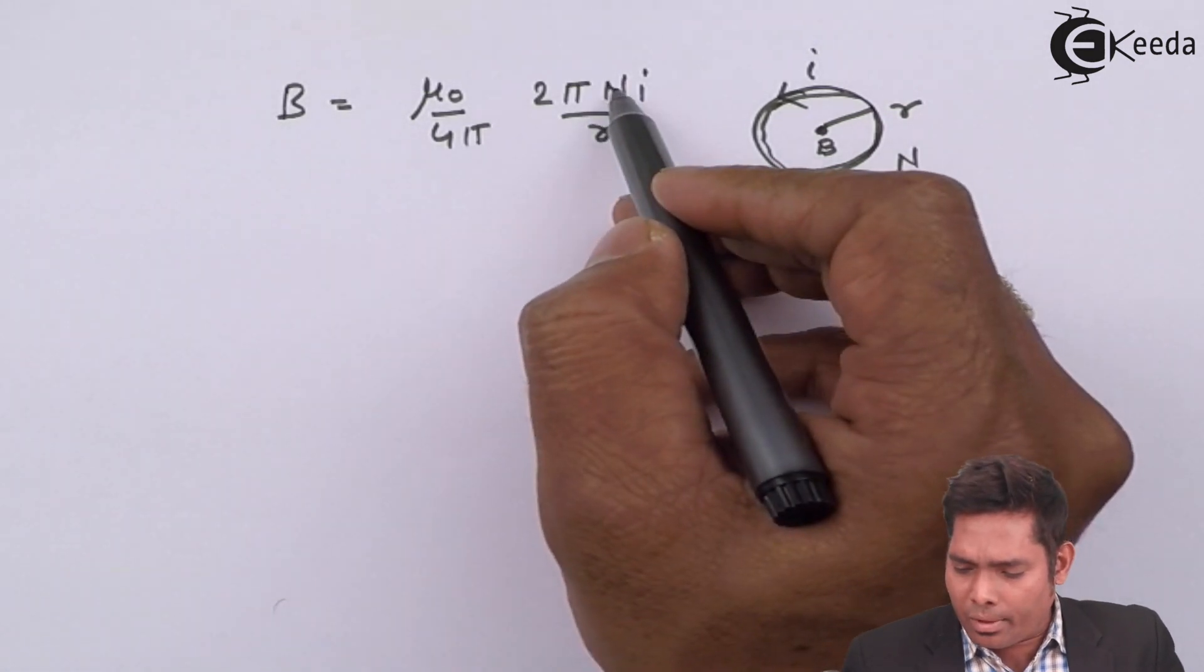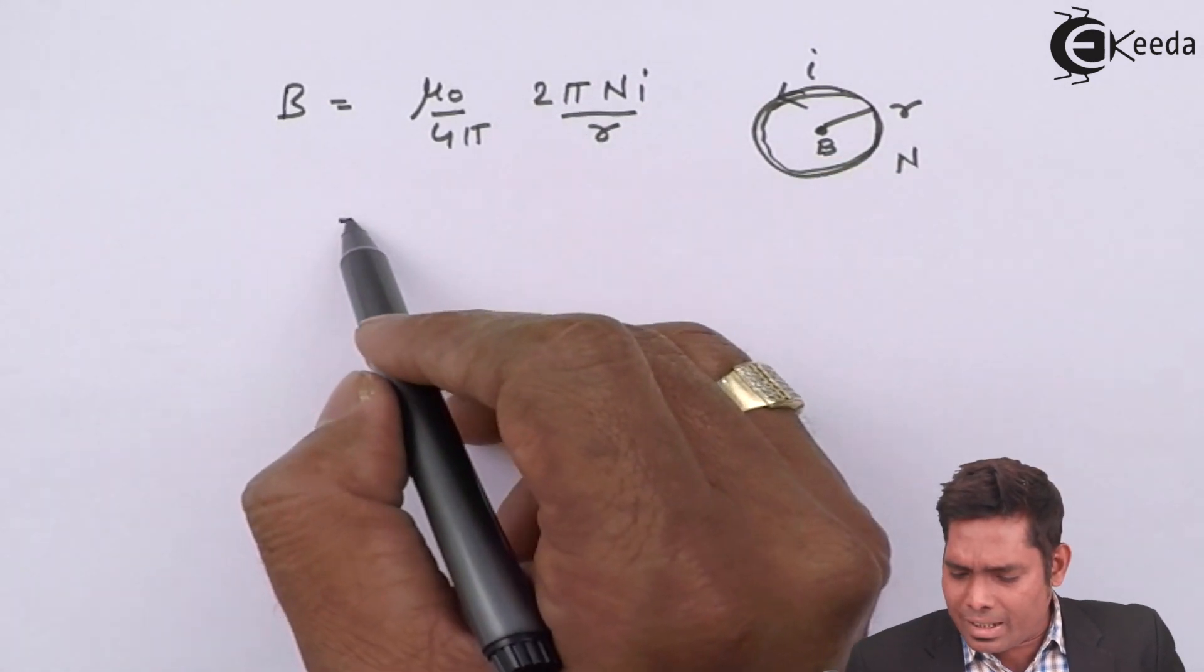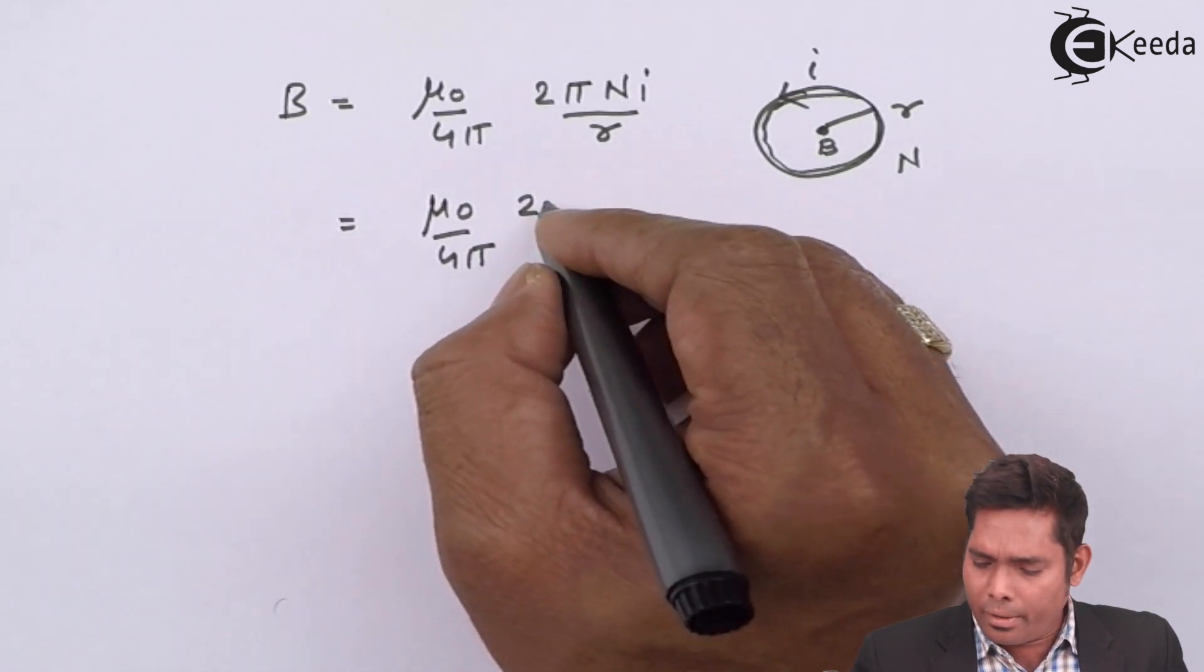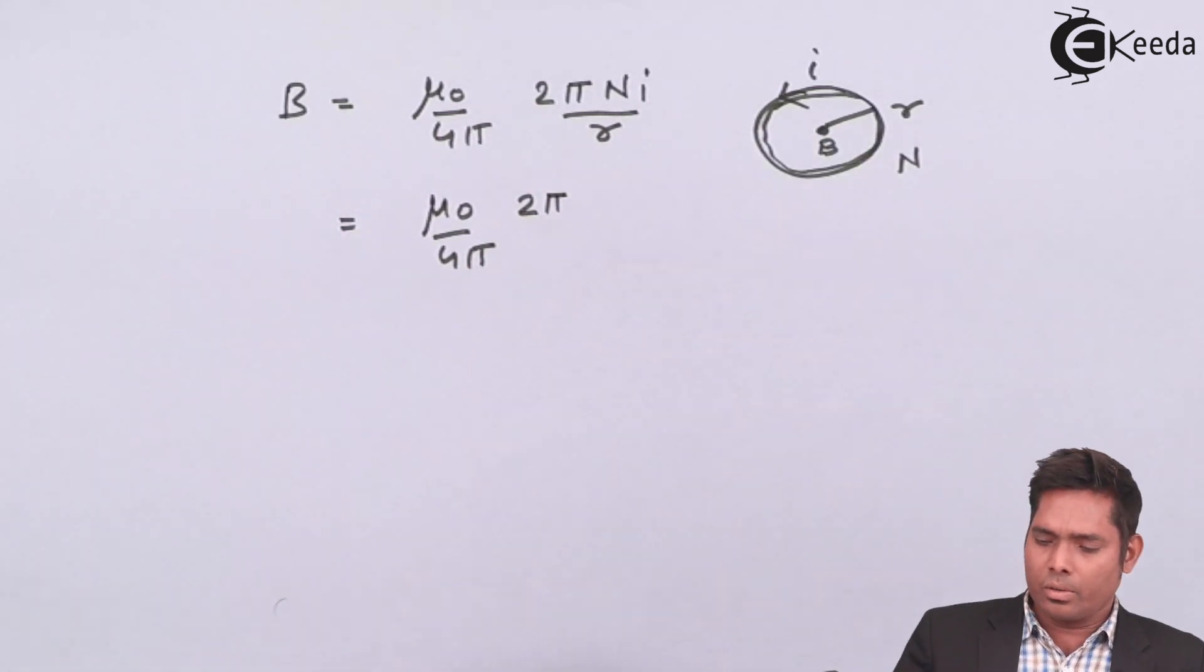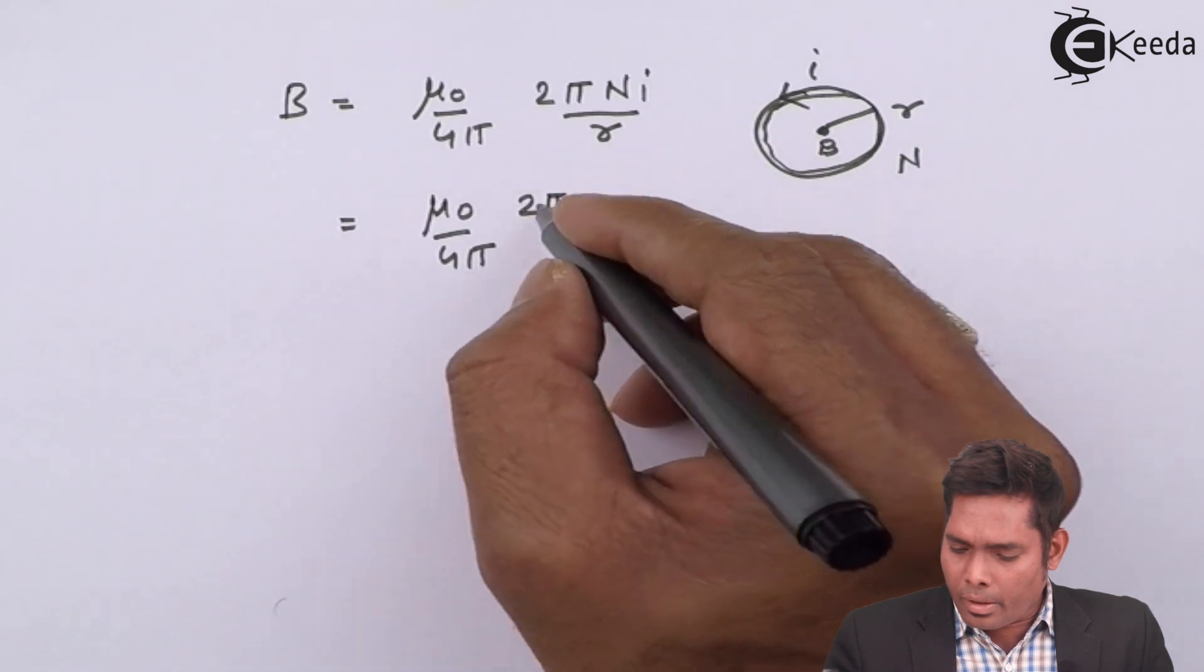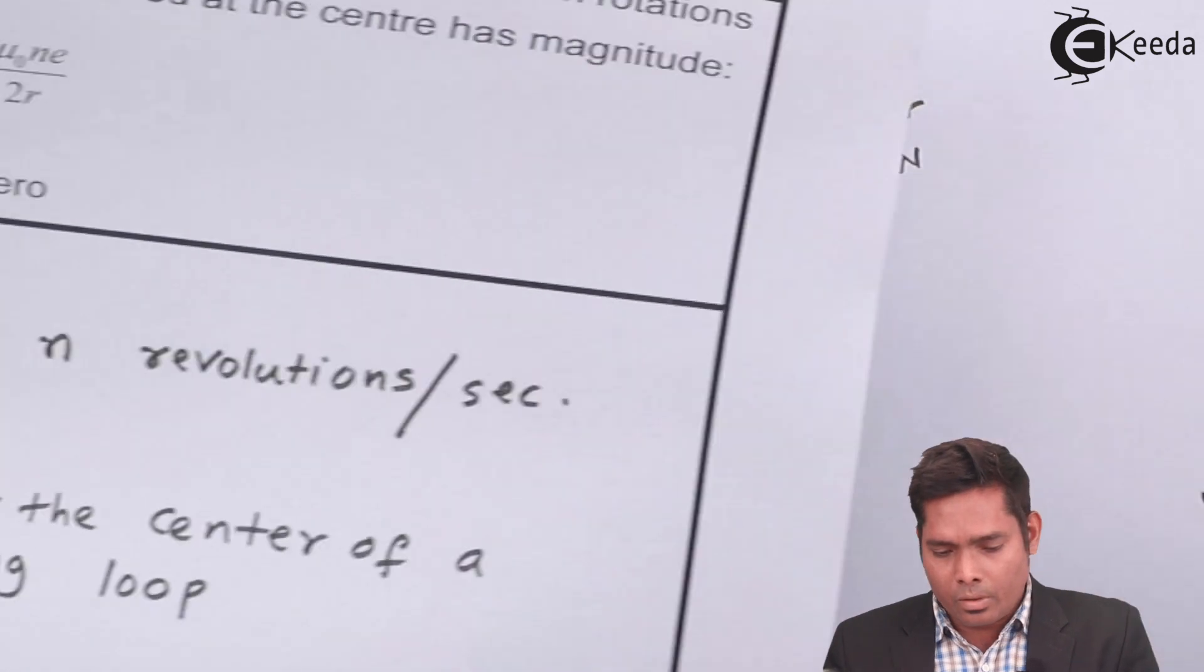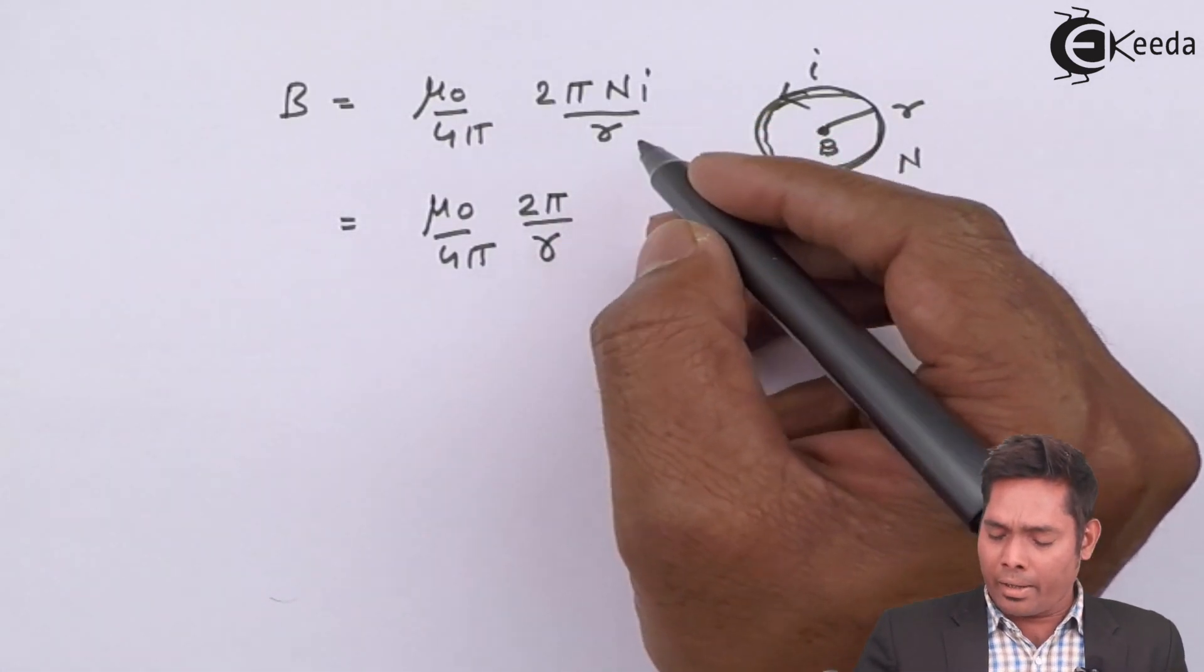Now, where n is the number of turns. Now, for this case, it is mu 0 upon 4 pi, 2 pi in one rotation. It is 2 pi, n is 1 divided by r is the radius. Here, r is the radius. So, I will put r and one i here.